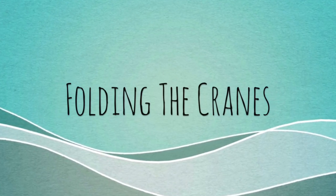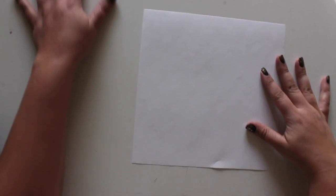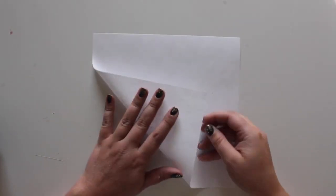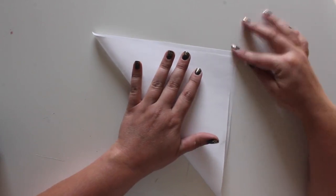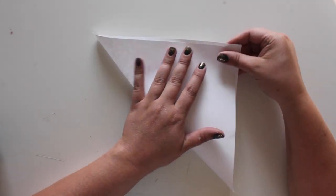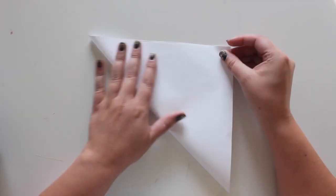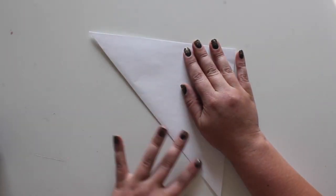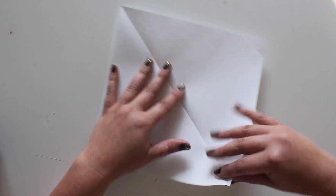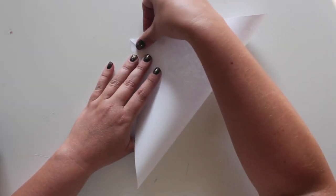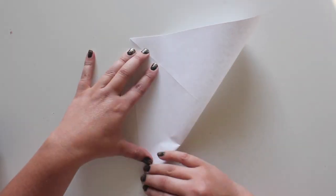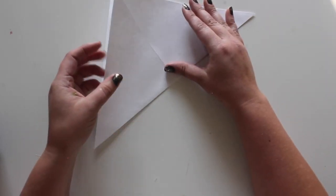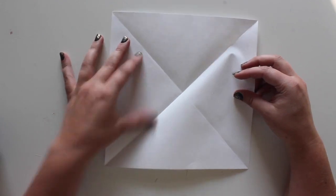Here's how to fold an origami crane. Start with a square piece of paper. I'm using regular copy paper. Fold the paper in half diagonally. Open, then fold in half diagonally the other direction. Open the paper and there should be an X fold on the paper.